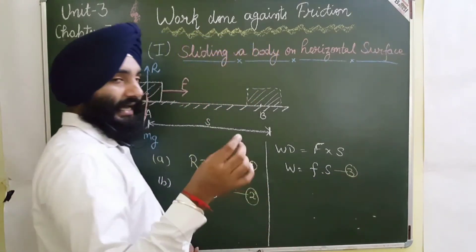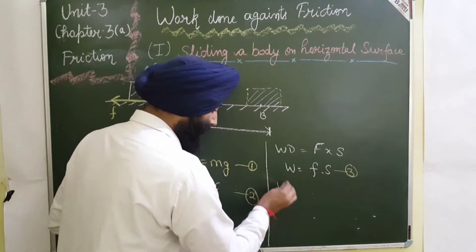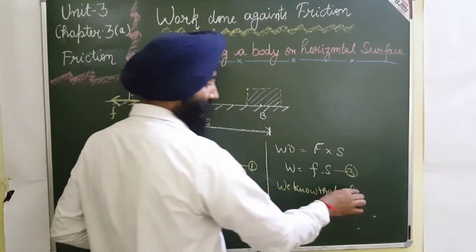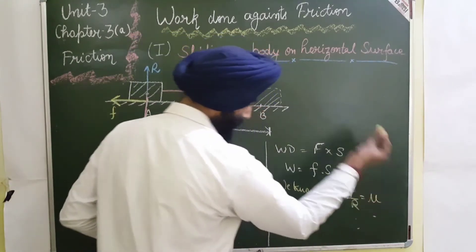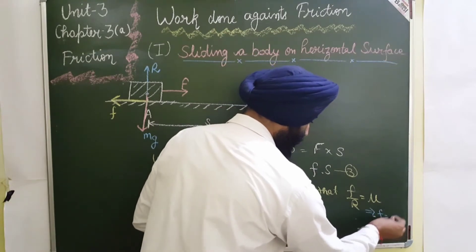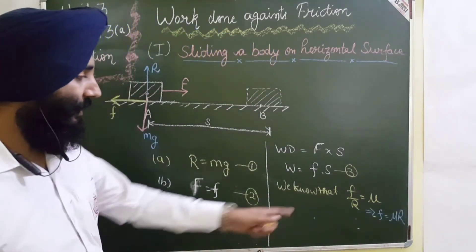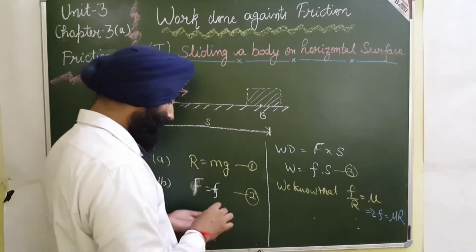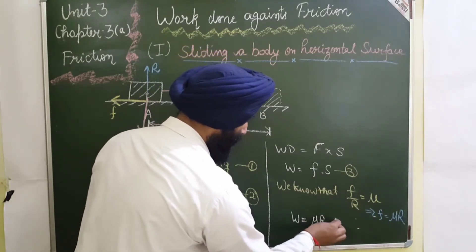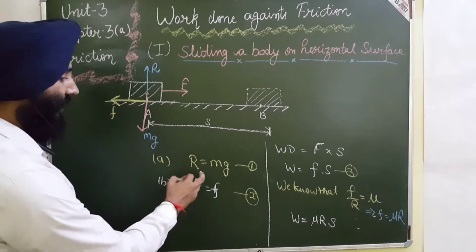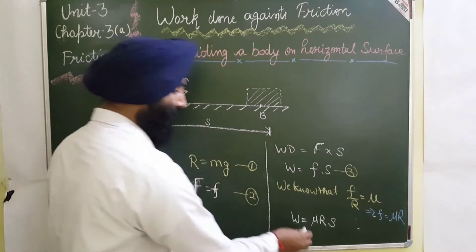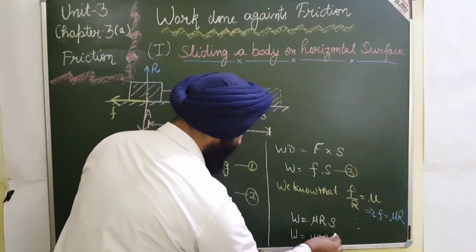As discussed in the previous lecture, frictional force divided by reaction equals the coefficient of friction. So frictional force equals μR. Substituting into equation 3, work done equals μR × S. We know R equals Mg, so our final result: work done against frictional force equals μMgS.